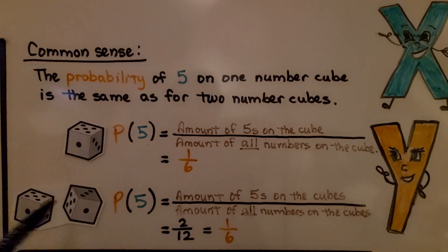If we had two cubes and rolled them, it would be the amount of fives on the cubes. Now there's one, two of them, and the amount of all the numbers on the cube would be six plus six, so it would be twelve, it would be 2/12, which simplifies to 1/6.